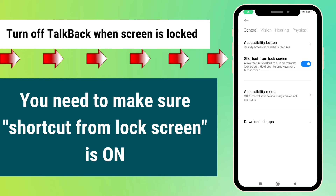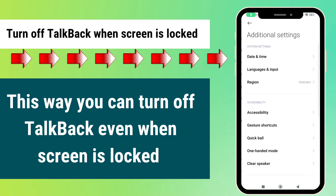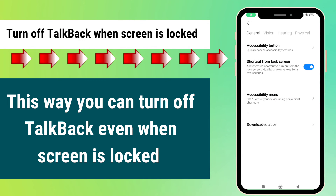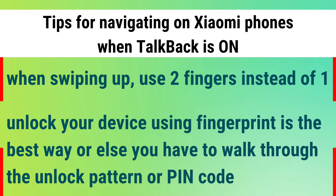Now, how to turn off TalkBack when the screen is locked: you need to make sure your shortcut from the lock screen setting is on. This will make it easy for you to navigate around and turn off TalkBack by pressing both the volume up and down keys.